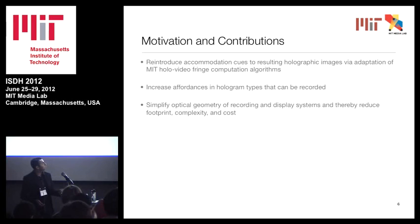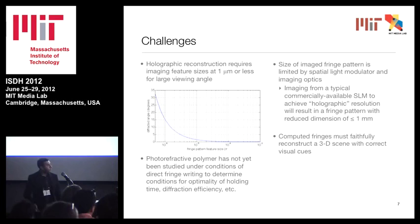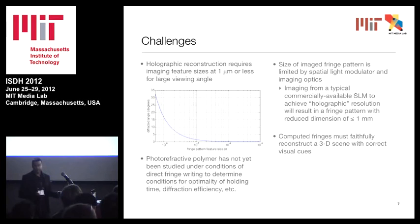The challenges for doing this: if you want a good viewing angle in the resulting holographic image, you need a feature size of about a micron or less. Since we're demagnifying the image from an SLM, the image that comes onto the photorefracted polymer is going to be pretty small, so you need some sort of spatial multiplexing or raster scanning technique to generate a large image. Furthermore, you want to compute fringes that can reconstruct a 3D scene faithfully with correct visual cues. This photorefractive polymer hasn't really been studied under the conditions of direct fringe writing, so we're venturing into new territory.